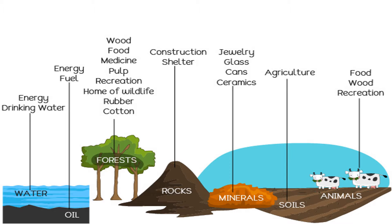We have quite a number of resources and we need them for different purposes. We use different resources in almost everything we do as humans. For instance, we need water for hydration, for domestic purposes, and for recreational purposes. We need oil for fuel, we need forests, rocks, minerals, and soils in order to plant our crops. We also need animals, which provide us with food, meat, milk, and other products.